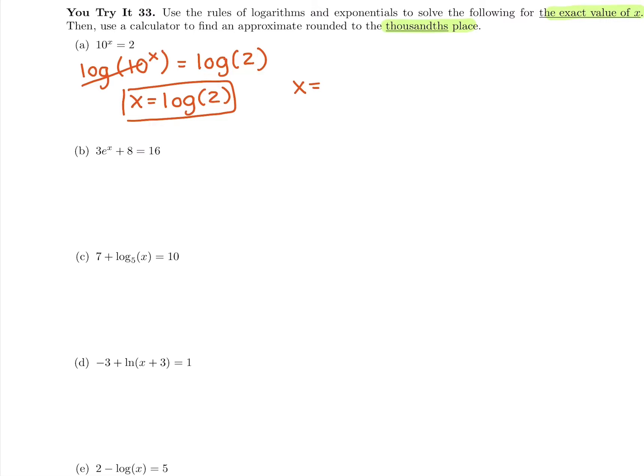Every calculator has a log button. I'm going to do log of 2 and round it to the third decimal place, which is going to give me 0.301. So there's my exact and my rounded answer.